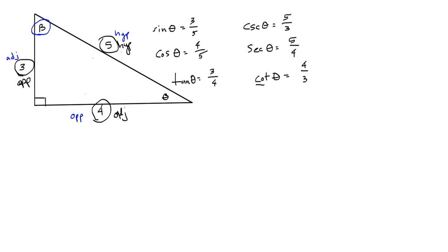So here's what we're going to do. I need to rewrite these. So for angle theta, we had 3 over 5 was sine. Cosine was 4 over 5. Tan was 4 over 3.